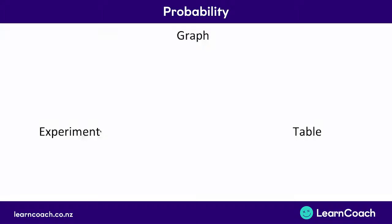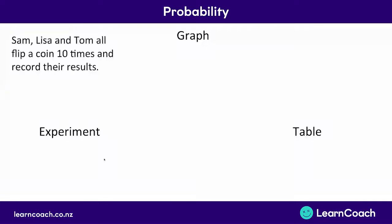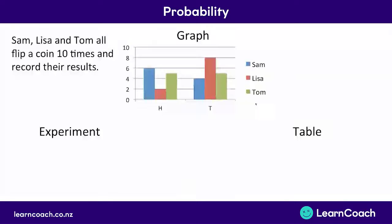So let's look at an example now. If Sam, Lisa and Tom all flip a coin 10 times and record their results, let's look at how that information could be portrayed. Well first of all we could have that in a graph. You could record the number of times each person throws heads and each person throws tails.